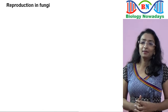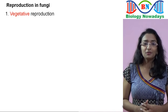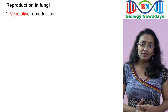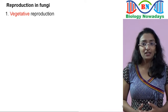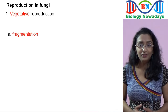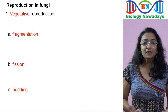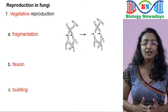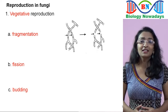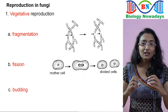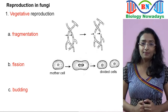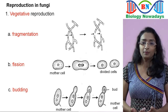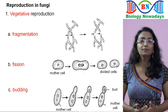Coming to reproduction in fungi, the first method is vegetative reproduction, in which a part of the fungus gives rise to another fungus. Vegetative reproduction in fungi takes place by fragmentation, fission, and budding. In fragmentation, the hyphae break up into small fragments and each piece grows into an entire fungus. In fission, the cell gets compressed in the centre and divides into two, giving rise to new individuals. Budding is commonly found in yeast, where buds arise from the protoplasm of the mother cell and ultimately become new individuals.